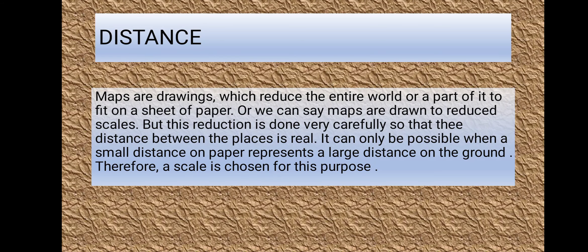As we have already discussed, maps are drawings which reduce the entire world, or a part of it, to fit on a sheet of paper. For example, if you have to make a map of Varanasi on A4-size paper, you will have to draw and fit the map on that sheet. There will be a ratio between the actual distance and the assumed distance on that sheet. We can say that maps are drawn to a reduced scale.